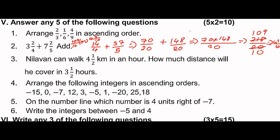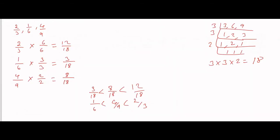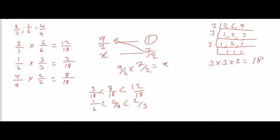Next problem: a person can walk 4 and 1/2 km in an hour, which equals 9/2 km per hour. How much distance will he cover in 7/2 hours? Distance equals 9/2 multiplied by 7/2. So 7 times 9 is 63, divided by 2 times 2 equals 4, giving 63/4.